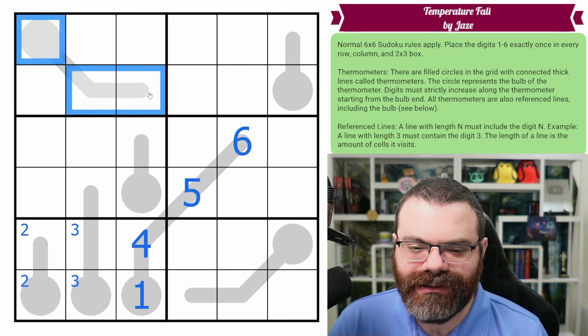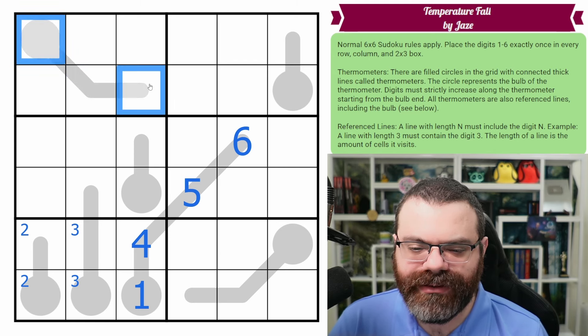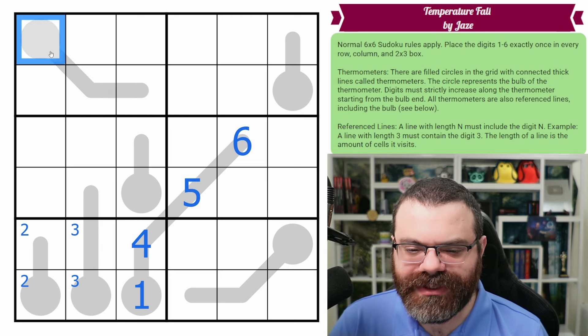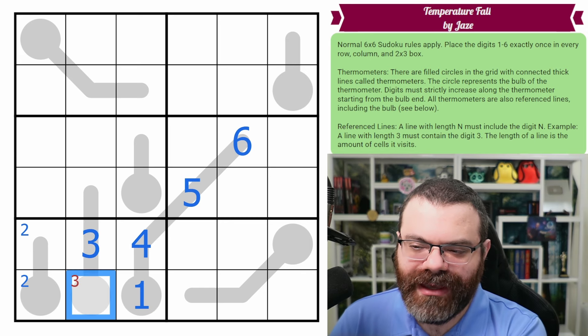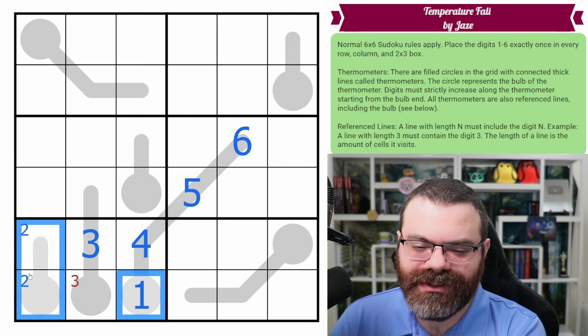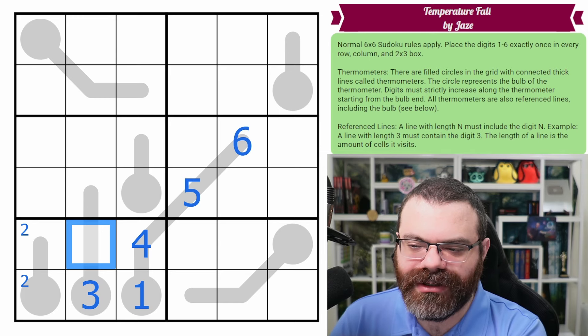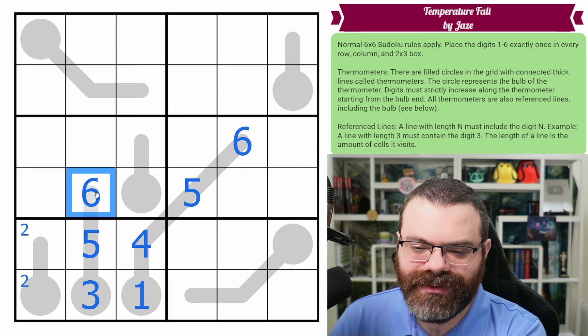All right. This needs a three on it. The three could be here or here though. Can this be the three, three, two, one? It actually seems reasonable. Can this be a three, right? If this was a three, this would have to be from one or two, but the one and two are here. So the three is placed here. Actually, this can't be four. So the minimum it can be is five. Can't be four because the four in the box that puts five, six here.